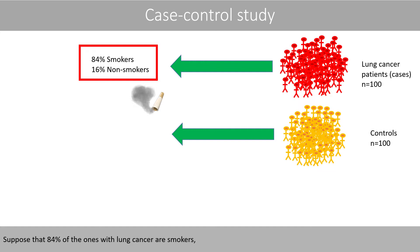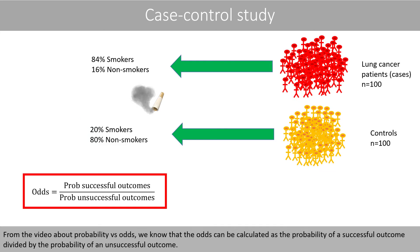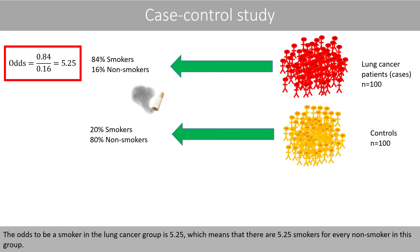Suppose that 84% of the ones with lung cancer are smokers, whereas only 20% of the ones in the control group are smokers. From the video about probability versus odds, we know that the odds can be calculated as the probability of a successful outcome divided by the probability of an unsuccessful outcome. Since we study smoking in our example, a successful outcome is associated with smoking. The odds to be a smoker in the lung cancer group is 5.25,